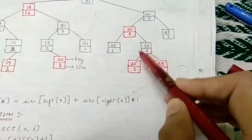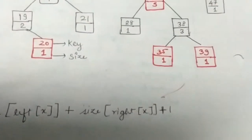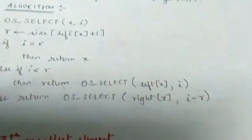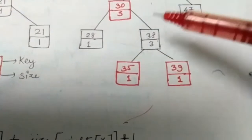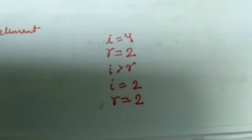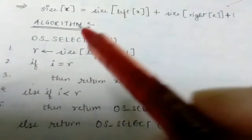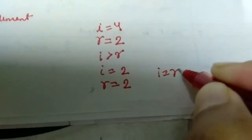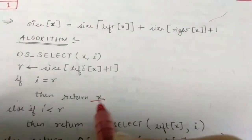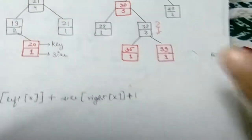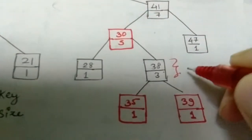The right child is node 38, which has size 3. We run the algorithm again: size(left(x)) plus 1 gives r equals 2. Now we check whether i equals r — and here i equals r equals 2. So the algorithm returns the value of x, and this node gives us the 17th smallest element.